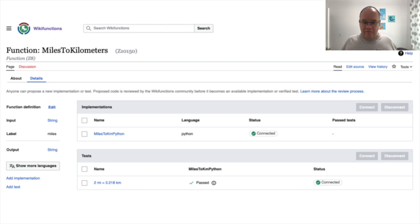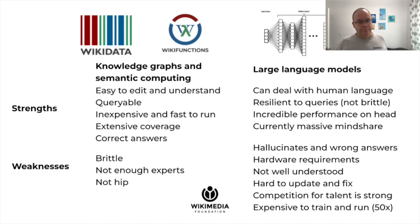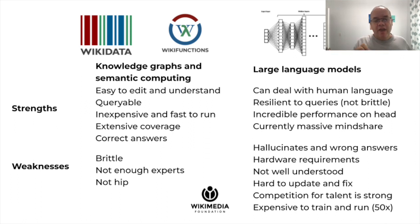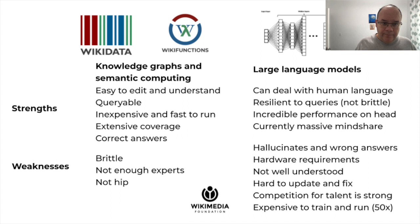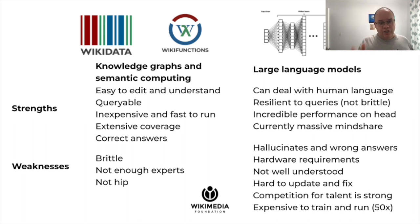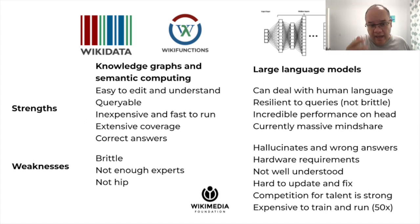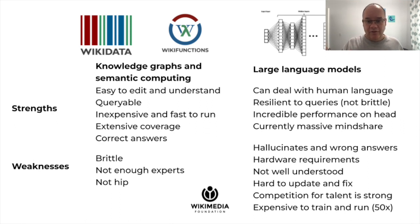A catalog of functions would expand the capabilities of large language models considerably, especially a catalog of functions that also has access to a large knowledge graph — what Wikifunctions will do with Wikidata. Knowledge graphs and semantic computing bring a number of strengths to the table which are very complementary to the strengths of large language models. Knowledge graphs can be easily edited and understood, they can be queried, they are inexpensive and fast to run. They can provide extensive coverage as we have seen with Lu Shijia — it is trivial to add more entities to Wikidata as the world evolves. And the answers are usually correct, and if they're not, they're easy to fix and they will remain fixed.